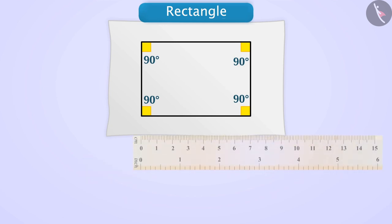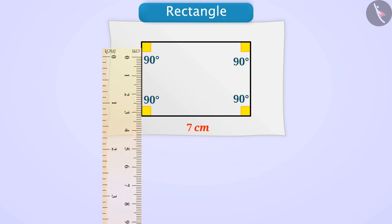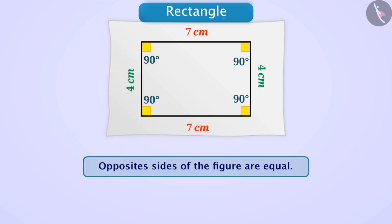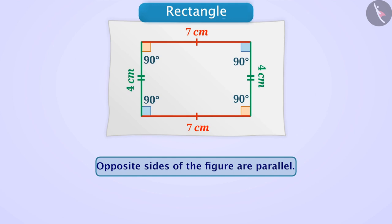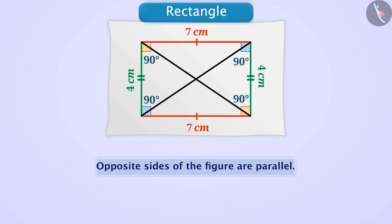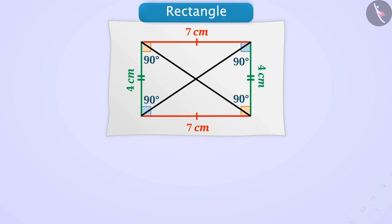Similarly, if you take a ruler and measure the length of its sides, then you will find that opposite sides of this figure are equal. We can also observe that opposite angles are equal and they are right angles. Since there is equal distance between the pair of opposite sides, we can say that opposite sides of this figure are parallel. If we make two diagonal lines and measure their length, we will find them to be equal.